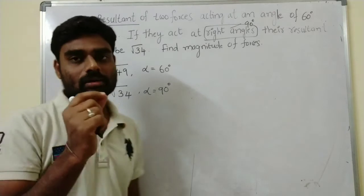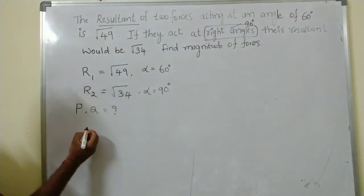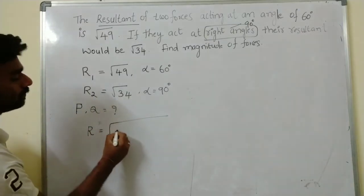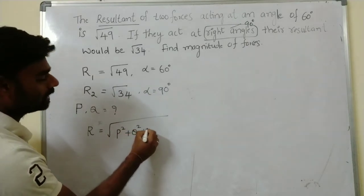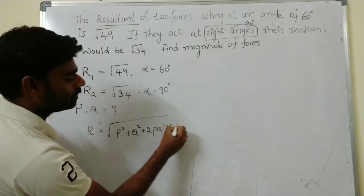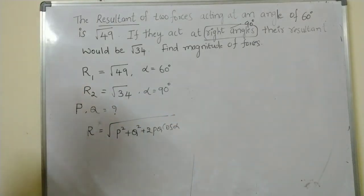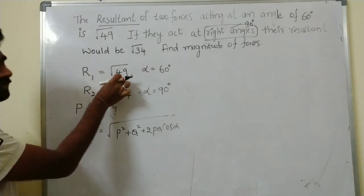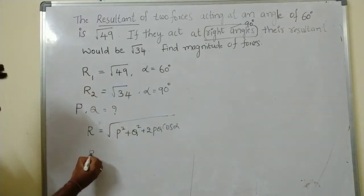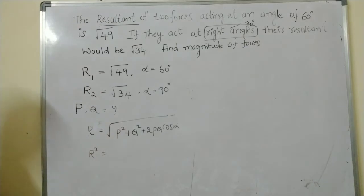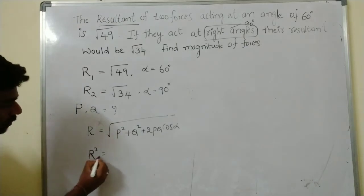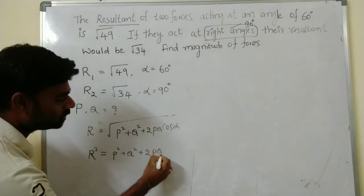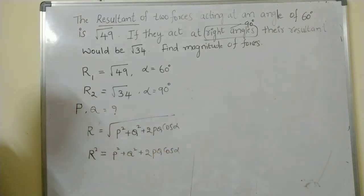We know the parallelogram law of forces formula. The formula is R² = P² + Q² + 2PQ·cosα. The resultant force given is √49 for case one, so in terms of R²: R² = P² + Q² + 2PQ·cosα.